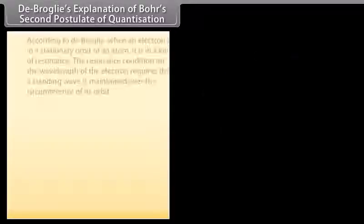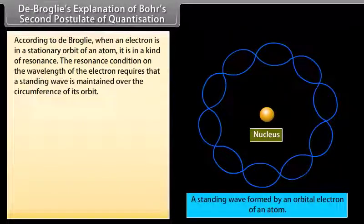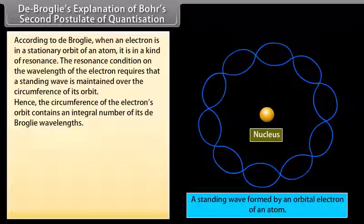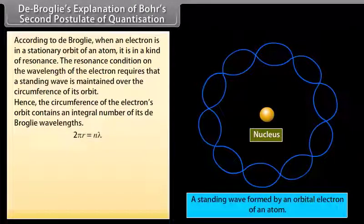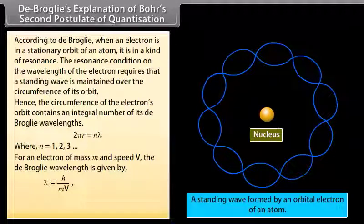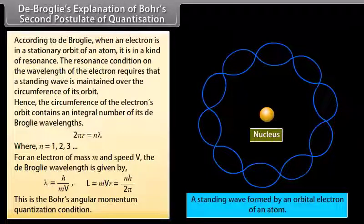De Broglie explained the quantization condition on angular momentum of an orbiting electron. According to De Broglie, when an electron is in a stationary orbit of an atom, it is in a kind of resonance. The resonance condition requires that a standing wave is maintained over the circumference of its orbit. Hence the circumference of the electron's orbit contains an integral number of De Broglie wavelengths: 2πr = nλ, where n = 1, 2, 3 and so on. For an electron of mass m and speed v, the De Broglie wavelength is λ = h/mv. This gives mvr = nh/2π, which is Bohr's angular momentum quantization condition.